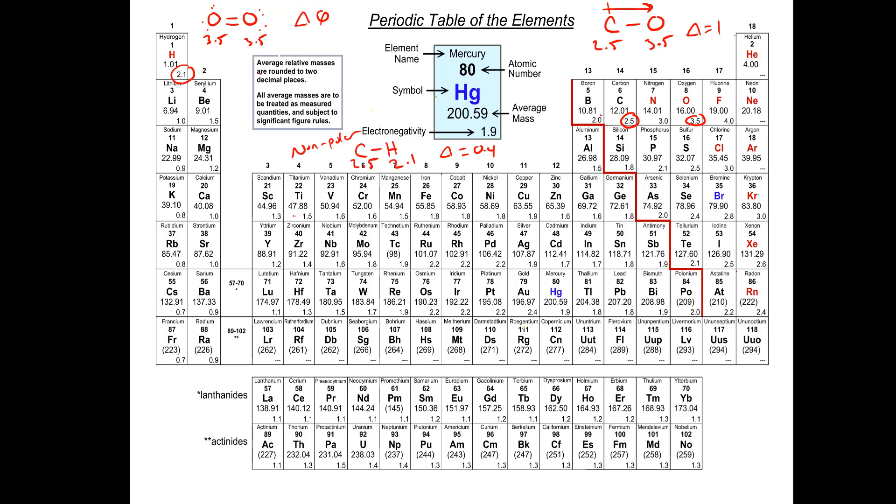So bond polarity really is that simple. It's looking at the two atoms, considering their electronegativity values, and comparing the magnitudes. If the difference is greater than 0.4, the bond's polar. If the difference is 0.4 or below, the bond is nonpolar.